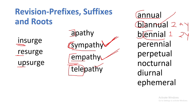Perennial means throughout the year — perennial waterfalls flow throughout the year. Perennial is a synonym of perpetual. Perpetual problems, like in TV serials where the hero's problems never seem to end, are seen all the time — never ending. Nocturnal birds are active only at nights. Diurnal birds are active in the mornings. Ephemeral means temporary — ephemeral data means the data is very temporary.